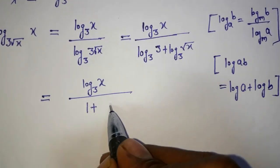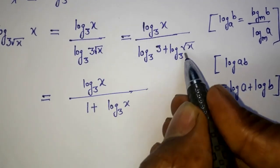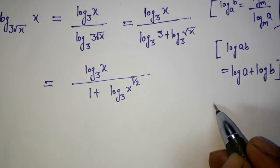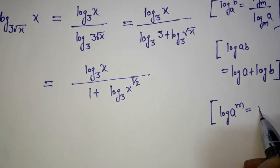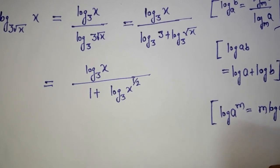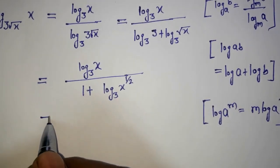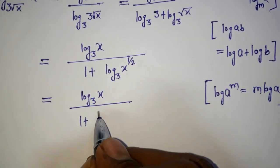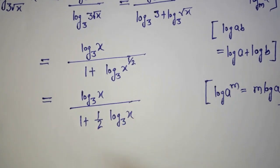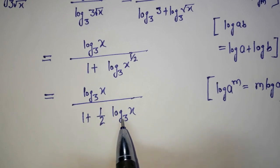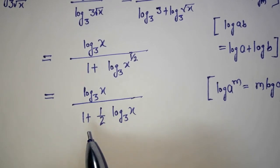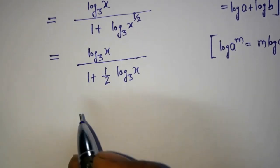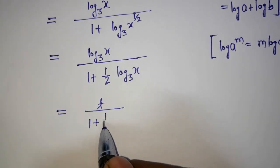Using the power rule — log(a^m) = m·log(a) — log base 3 of √x becomes (1/2)·log₃(x). So the denominator becomes 1 + (1/2)·log₃(x). Since we defined t = log₃(x), the first term becomes t divided by (1 + t/2).